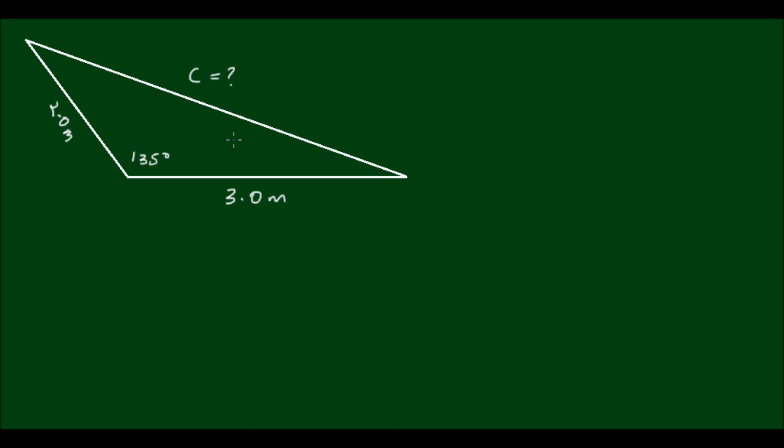I'm going to pretend that I only know the basic laws of trigonometry and geometry, like Pythagoras' Theorem, and I don't know anything about the law of sines or cosines. How would I go about finding the length C?